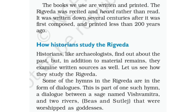Some of the hymns in the Rig Veda are in the form of dialogues. This is part of one such hymn — a dialogue between a sage named Vishwamitra and two rivers, Vyas and Satlaj, that were worshipped as goddesses. Rig Veda ke kuch sukta dialogues ke roop mein hain — Vishwamitra naam ke rishi aur deviyon ke roop mein poojit do nadiyan, Vyas aur Satlaj ke beech.